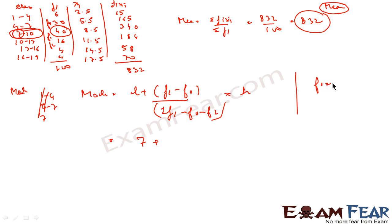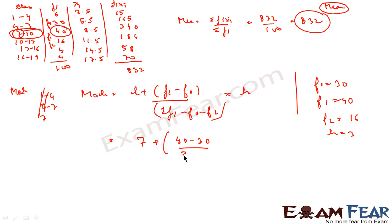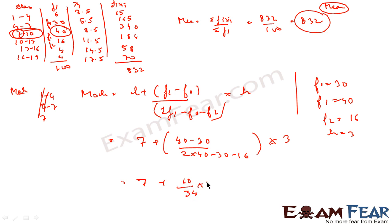f0 = 30 (frequency of the preceding class), f1 = 40 (frequency of the mode class), f2 = 16 (frequency of the following class), and h = 3. Substituting: Mode = 7 + (40 − 30) / (2×40 − 30 − 16) × 3 = 7.88. So the mode is 7.88.